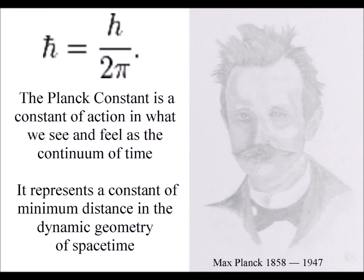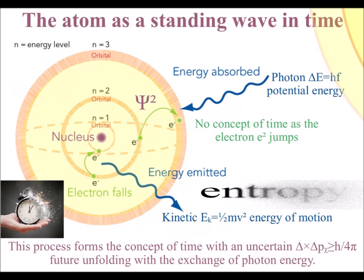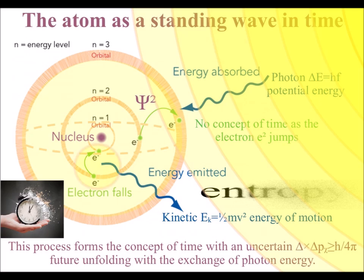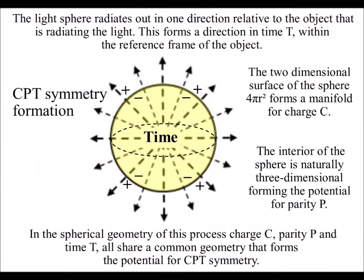Light radiates out spherically, with the interior of the sphere forming the characteristics of three-dimensional space. The wave front in the form of the two-dimensional surface of the sphere forms a manifold for the movement of positive and negative charge within our ever-changing world.